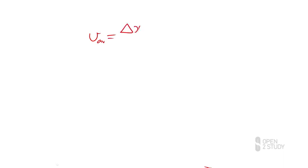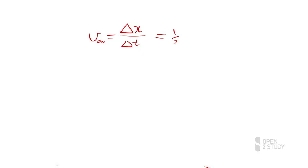It turns out that for constant acceleration, our average velocity is also just the average of our initial and final velocities. So we can write that down as half the sum of our initial and final velocities.